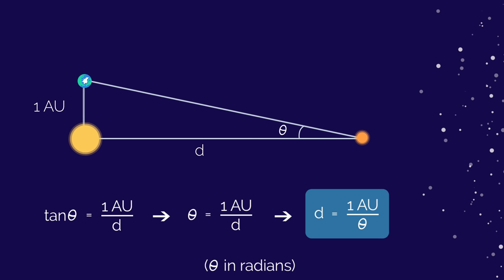This is really useful because it allows us to calculate the distance to nearby stars very accurately. This can then be used to check the distance measured by different methods to even more distant objects out in space.